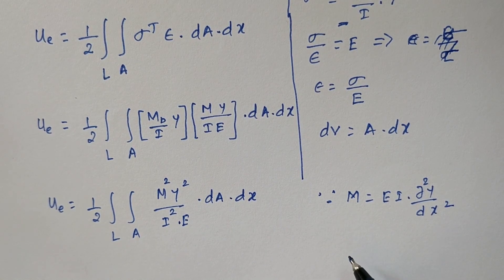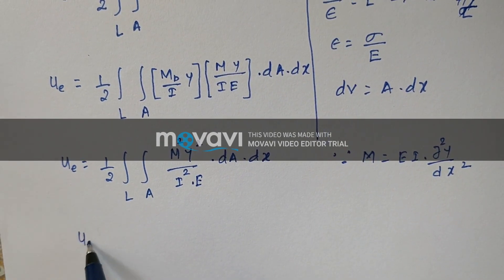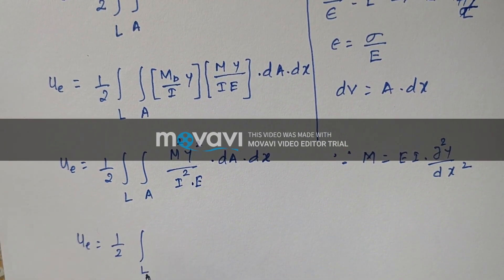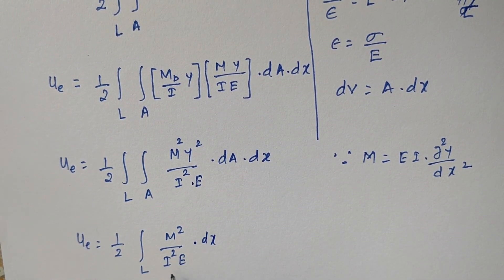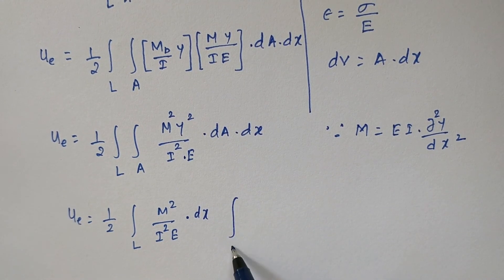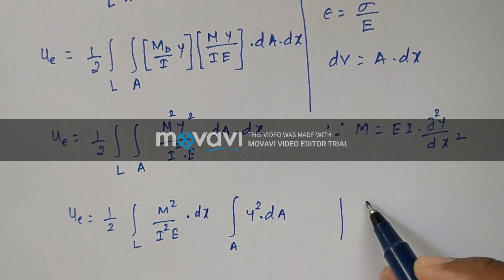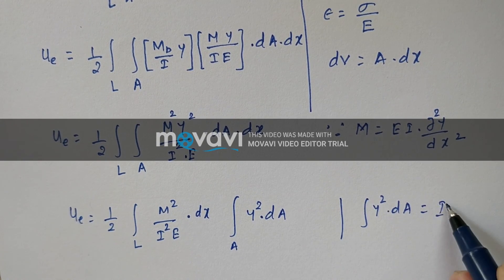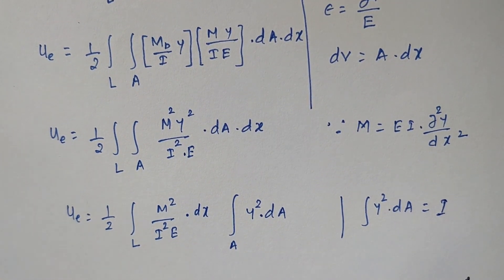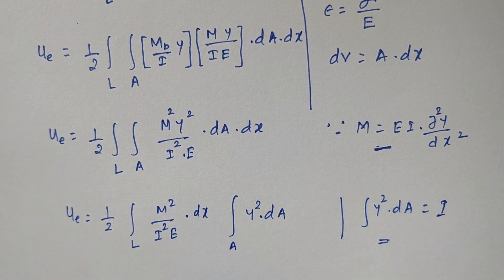Now what we can do is separate this function: 1/2, over the length: m² / (i² · E) times dx — this is the over-the-length function — and the integral over the area of y² dA can be written as I. Substituting back into the basic equation gives us a simplified form.